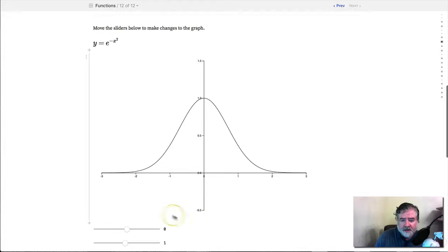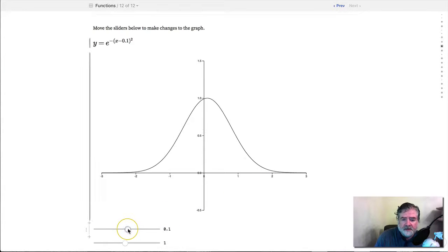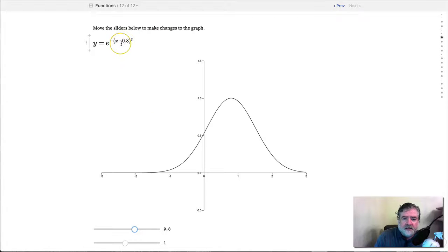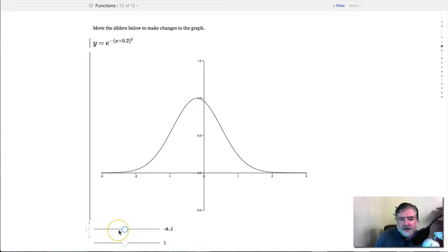And what the students can do there is they can adjust the sliders. So here, this slider adds or subtracts something directly to x and they can see that that shifts the curve back and forth.